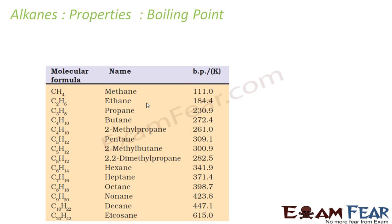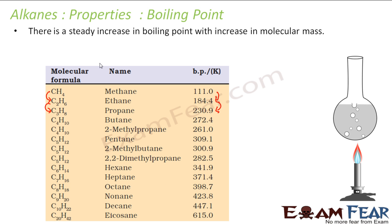Now let's talk about the boiling point of alkanes. If you see the trend, the moment you increase the molecular mass, the boiling point increases. There is a steady increase with increase in molecular mass. Why? Because the boiling point depends on the van der Waals force. The more the molar mass, the more the surface area, and the more the van der Waals force. Typically, every CH2 addition results in a difference of almost 20 to 30 degrees Celsius.